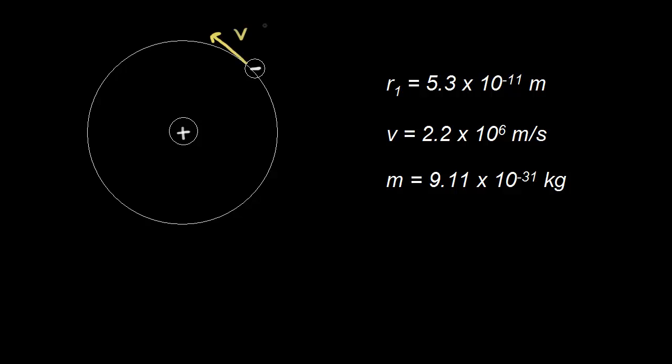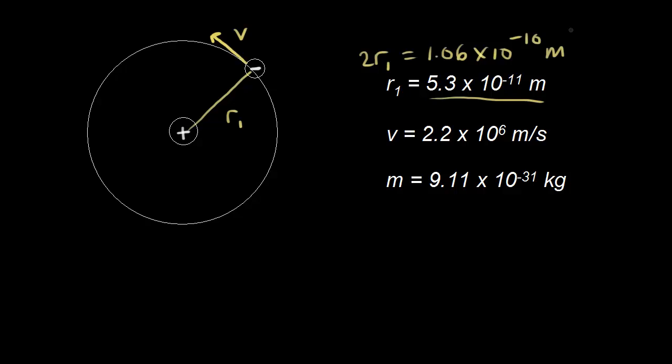The Bohr model is useful because it allowed us to understand quantized energy levels. The radius for an electron in the ground state — the radius of the first energy level — is 5.3 times 10 to the negative 11 meters. The diameter of that circle would be two times that, equal to 1.06 times 10 to the negative 10 meters. This is a rough estimate of the size of the hydrogen atom using the Bohr model with an electron in the ground state.